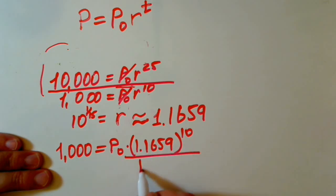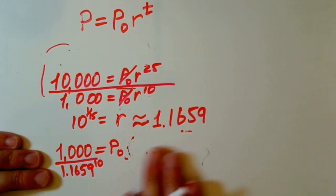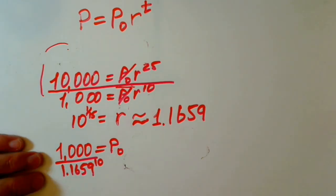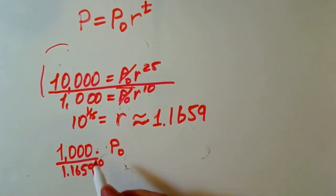We are just dividing by this number, 1.1659 to the 10. 1.1659 raised to the 10, and this one cancels. Now, our initial population equals, let's calculate.